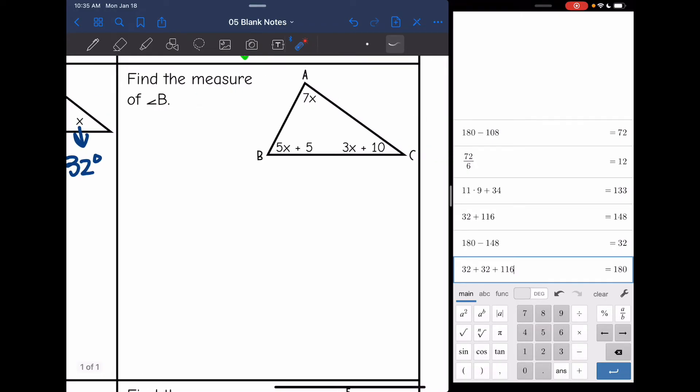Same thing on the next one, they want us to find the measure of angle B afterwards. So we'll have to substitute back in. But the process is still the same, I'm going to add my three angles together and set them equal to 180. So 7x plus 5x plus 5 plus 3x plus 10. Those three angles equal 180 degrees. Obviously, this left side can be simplified, I can combine 7 plus 5 plus 3x, and I get 15x. And then 5 plus 10 is 15. And it equals 180.